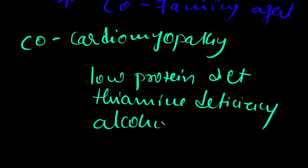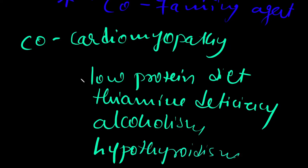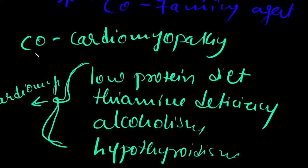However, cobalt cardiomyopathy seems to require other cofactors such as low protein diet, high protein diet, thiamine deficiency, alcoholism, and hypothyroidism. All these factors together could cause cardiomyopathies. However, when these happen along with cobalt exposure, that may lead to severe cardiomyopathy, also termed as cobalt cardiomyopathy.